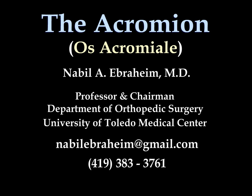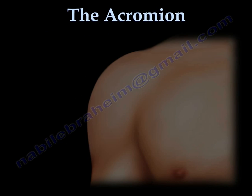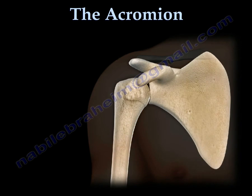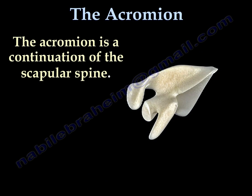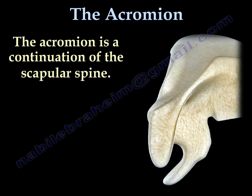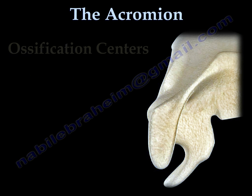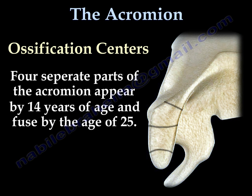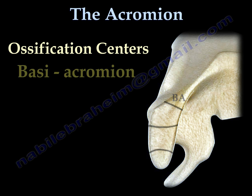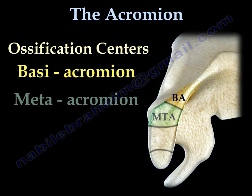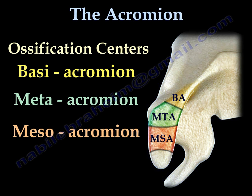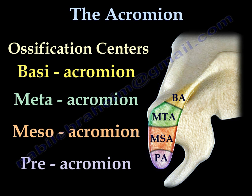The acromion is a continuation of the scapular spine. It has four separate ossification centers and by 14 years of age it appears, fusing by the age of 25. The four centers are the basiacromion, metacromion, mesoacromion, and preacromion.